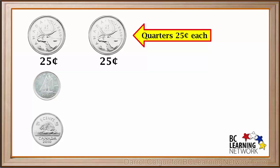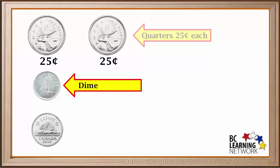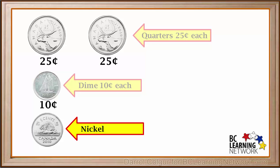We have two quarters, which are worth 25 cents each, one dime, which is worth 10 cents, and one nickel, which is worth 5 cents.